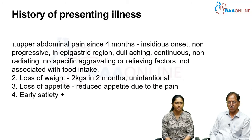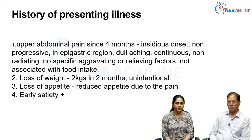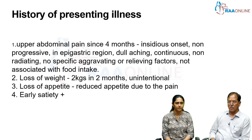Coming to the history of presenting illness, she was apparently normal until 4 months ago when she developed upper abdominal pain which is insidious in onset, non-progressive, located in the epigastric region, dull aching, continuous, non-radiating. There are no specific aggravating or relieving factors and it is not associated with food intake.